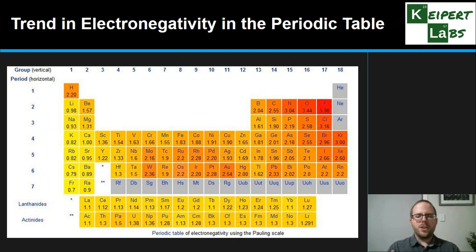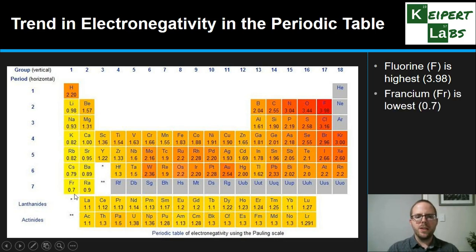Now if we have a look at how electronegativity tracks across the periodic table, this particular image is color coded like a heat map. The more red it is, the higher the electronegativity. The more pale yellow it is, the lower. We range from fluorine as the element that has the highest electronegativity in this top right-hand corner at 3.98, and then francium down in this bottom left-hand corner is the lowest at 0.7.